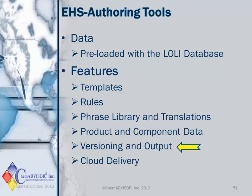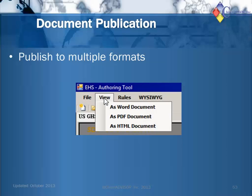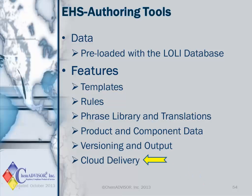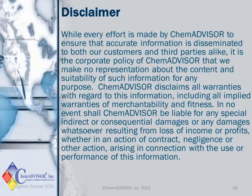Now let's look at versioning and output. In EHSAT, draft and final status documents are maintained for you, and there are several aspects of version control in the system. New versions are automatically incremented, and you also have the option to identify whether changes are major, minor, or based on a regulatory change. EHSAT also provides several document output format options: Word, PDF, and HTML are all available. The primary delivery method for EHSAT is cloud-based. This eliminates the need for you to load the application and database on your server, and ChemAdvisor will provide timely updating of the Lawly database and maintain the application for you. Thank you, and now it's time for your questions.